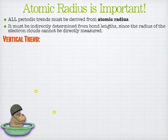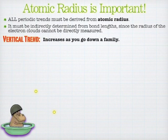Within a family, the vertical trend is: as you go down a family, what do you think is going to happen? The radius is going to get bigger or smaller? If you said bigger, you're right. But the reason is the interesting part — why does it get bigger?